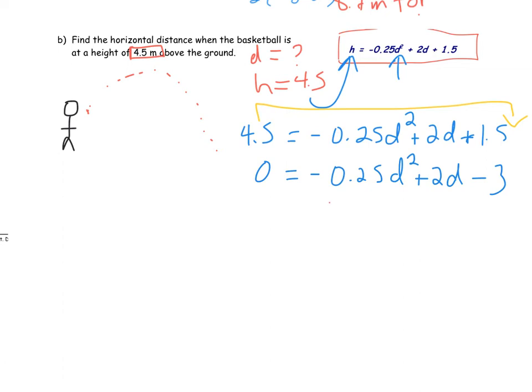So there we have it. Now I just have a different quadratic equation that I can solve using the quadratic formula. I can see here my A value is the same at negative 0.25. My B value is 2, but my C value changes to negative 3. So I want you to go ahead and solve this again for practice and then resume the video when you're ready to check your answer and compare it to mine.